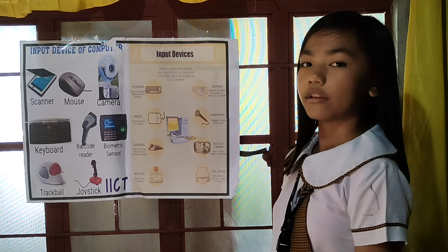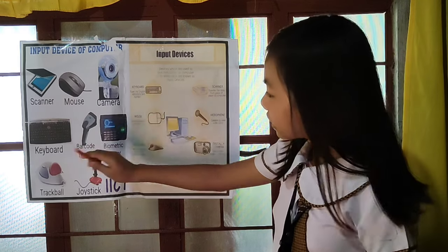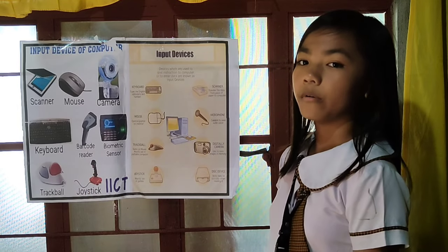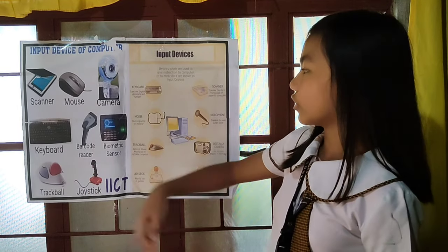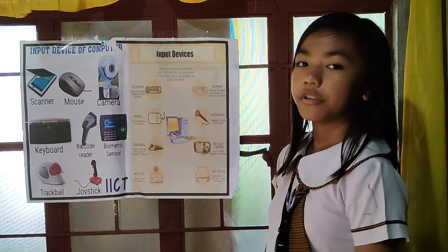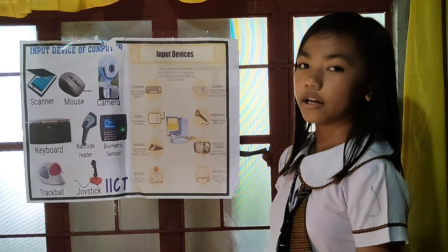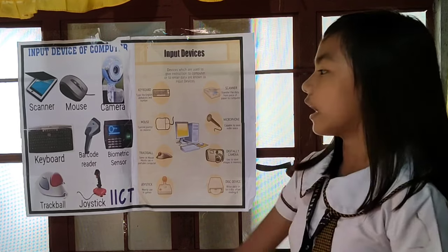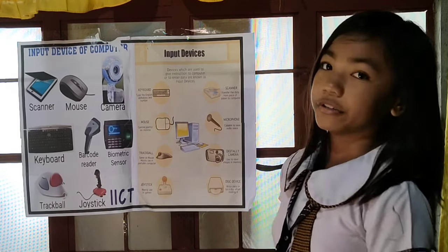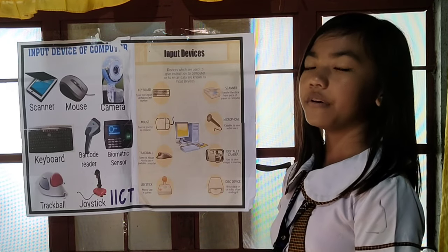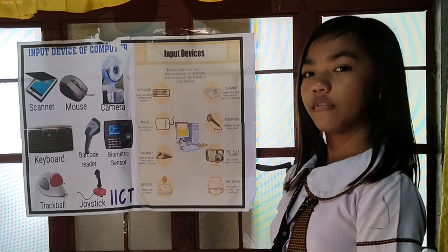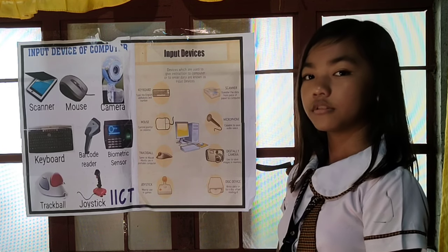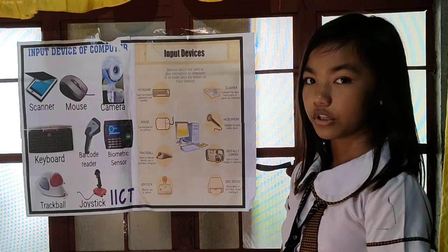Number 1: Keyboard. Number 2: Pointing device or mouse. Number 3: Data entry device. The keyboard is the most common and very popular input device, which helps to input data to the computer.